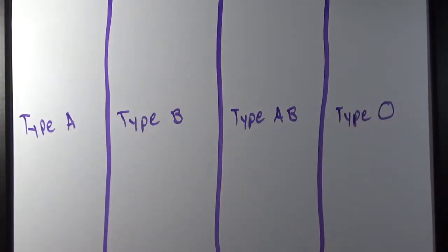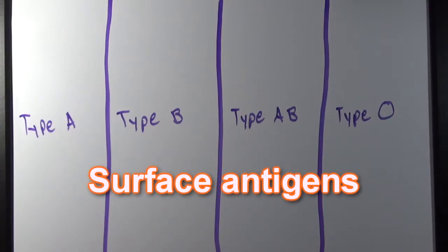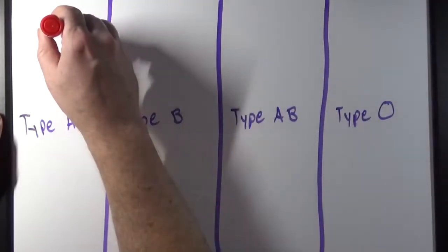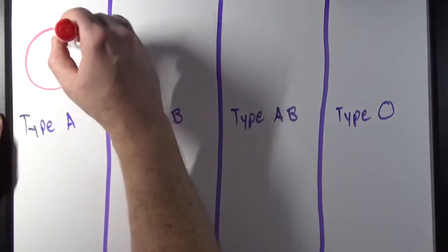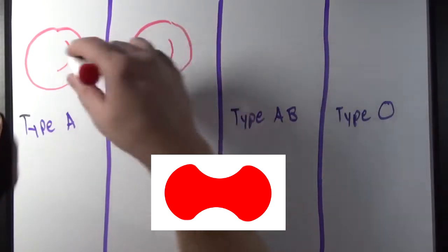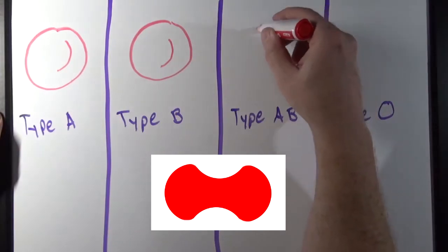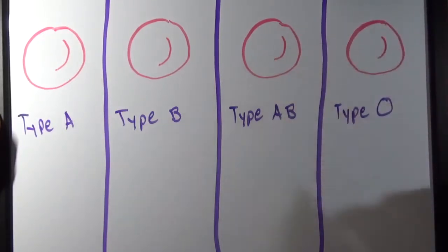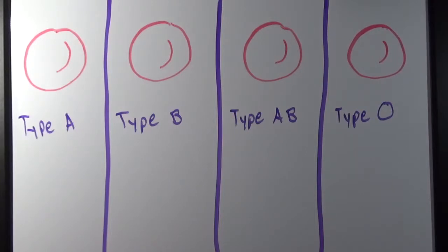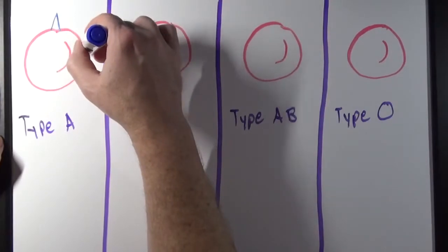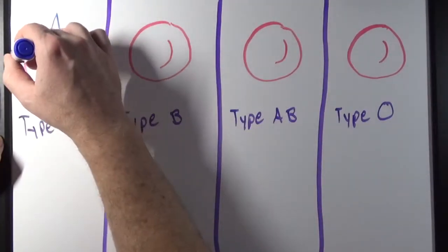When we're talking about blood types, we're actually talking about the surface antigens on the surface of the red blood cells. Surface antigens are like name tags on the surface of a red blood cell. I'm going to draw some red blood cells here. Red blood cells are a biconcave shaped cell, and each different red blood cell is going to have a different surface antigen.